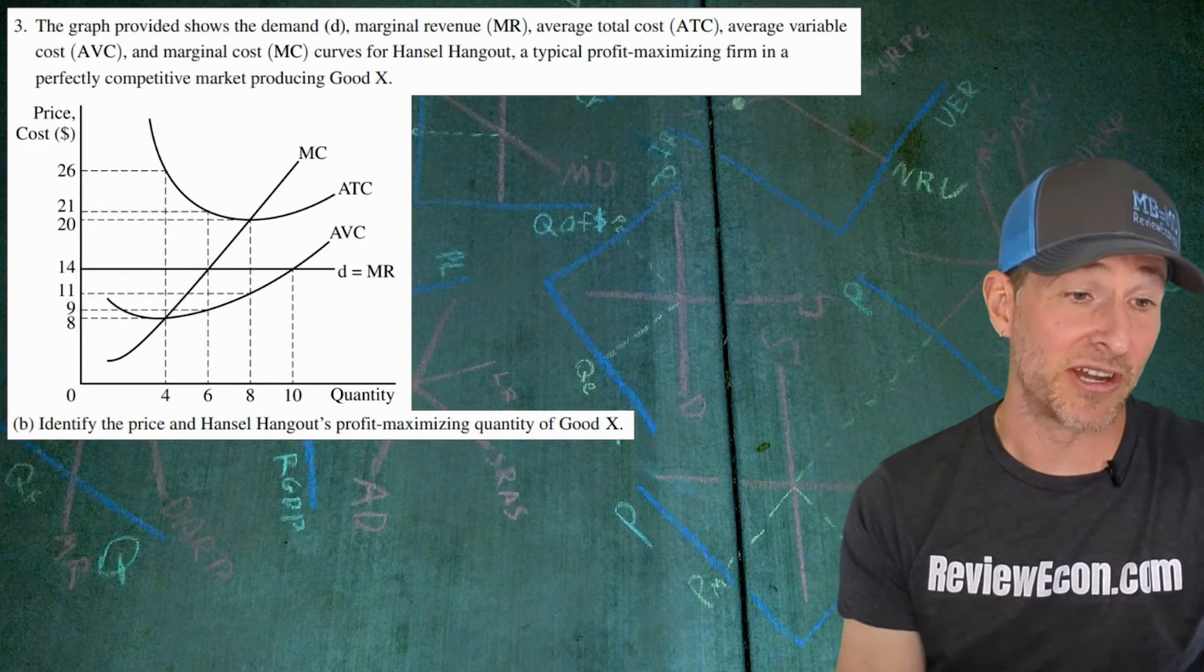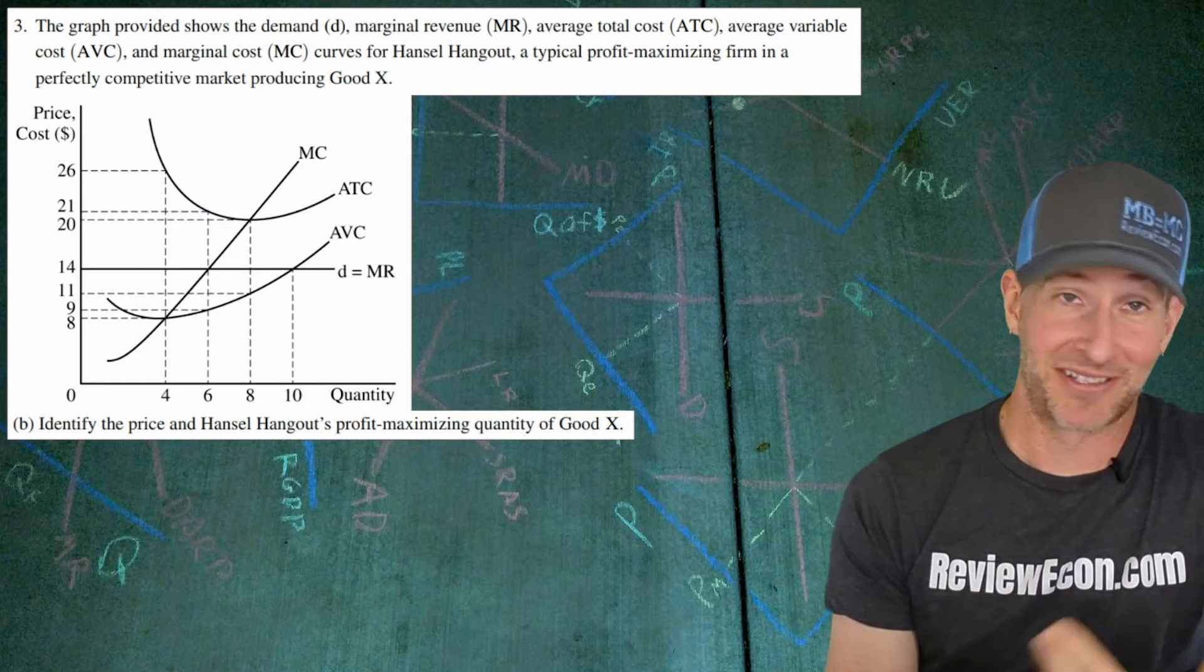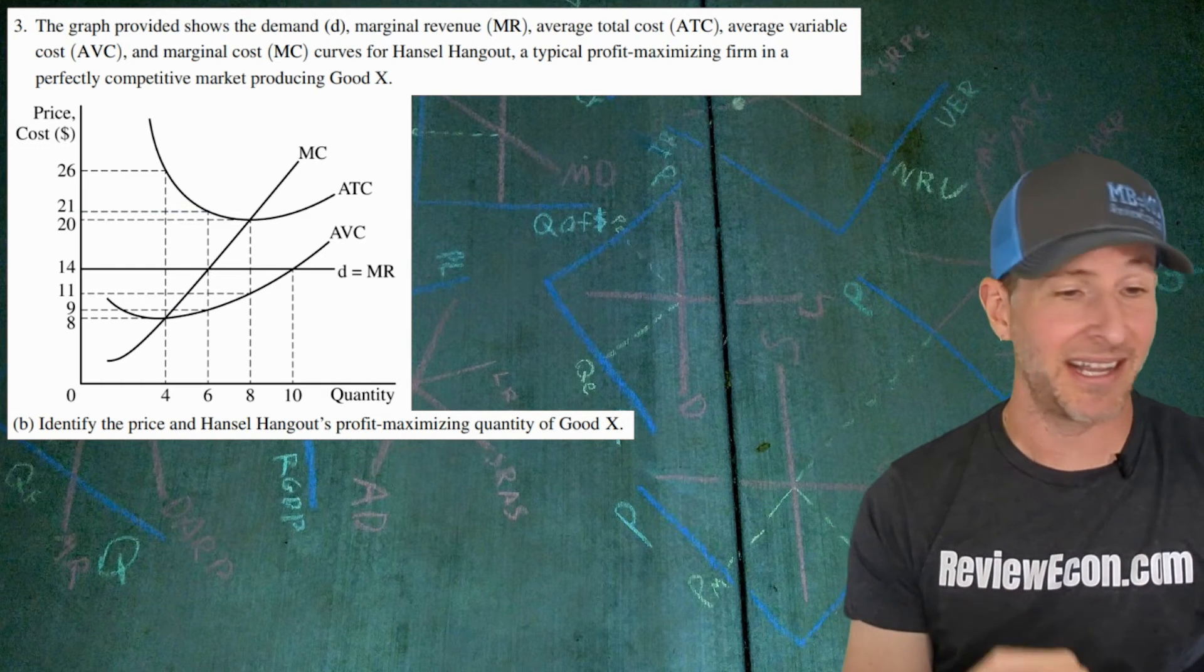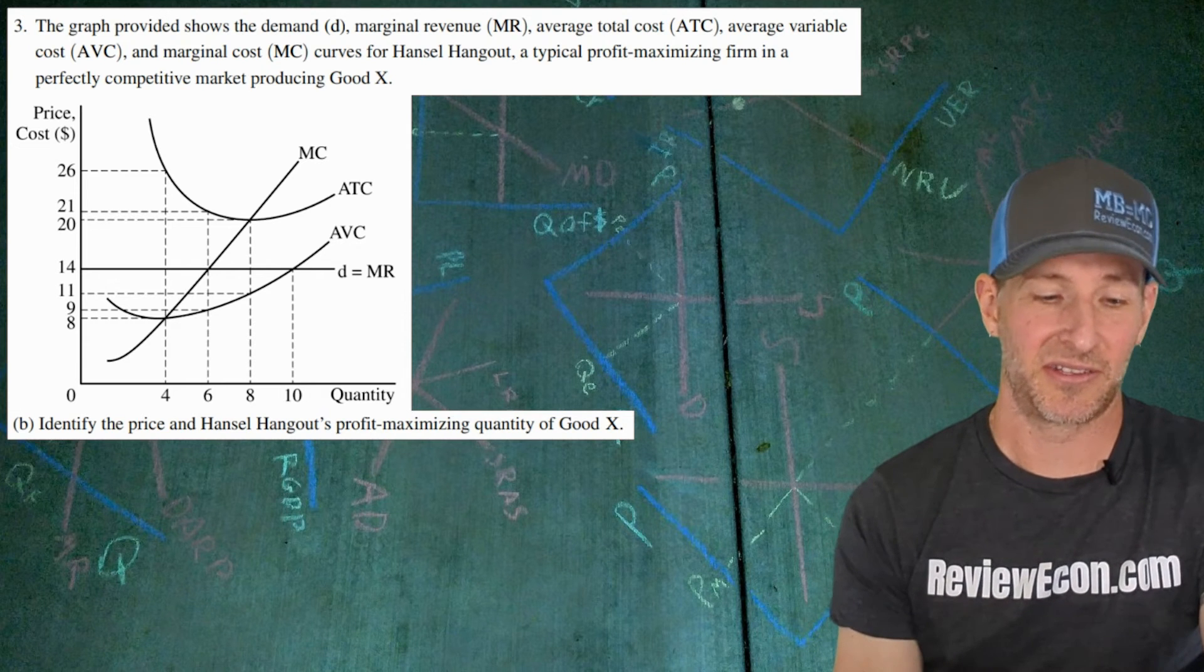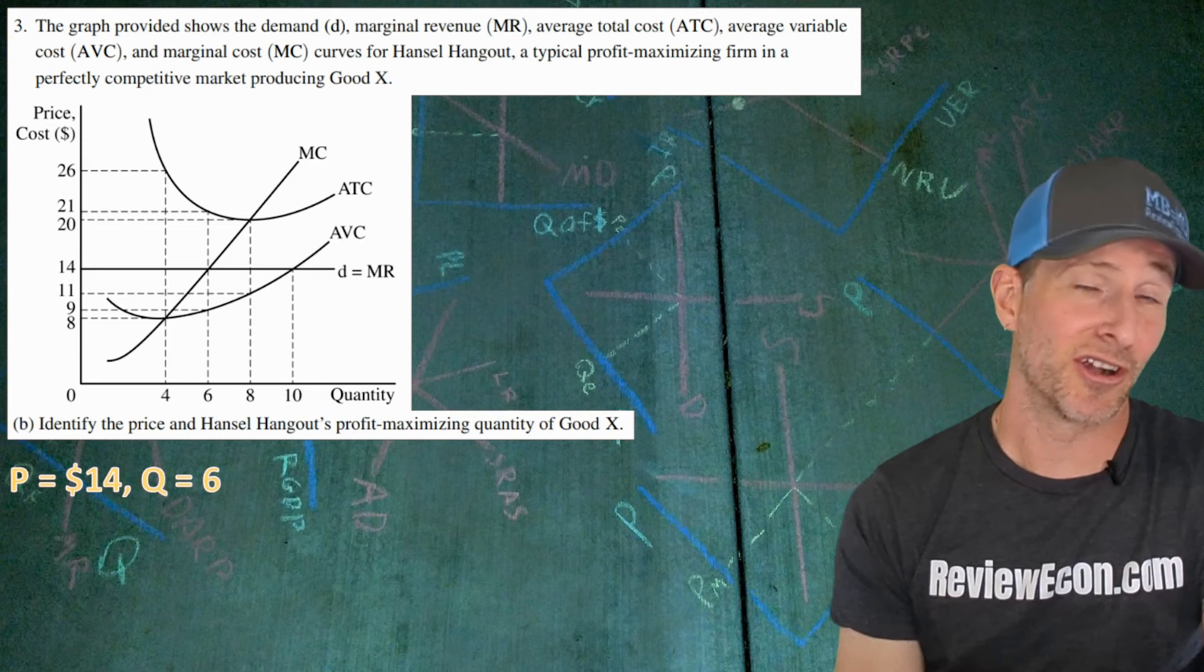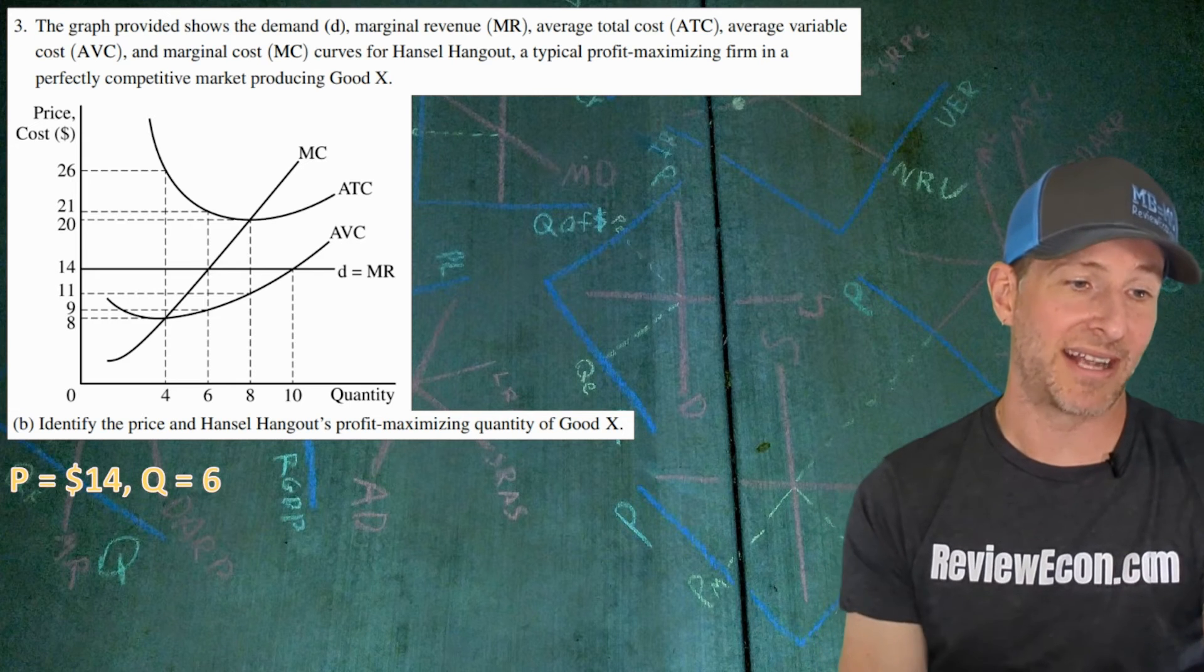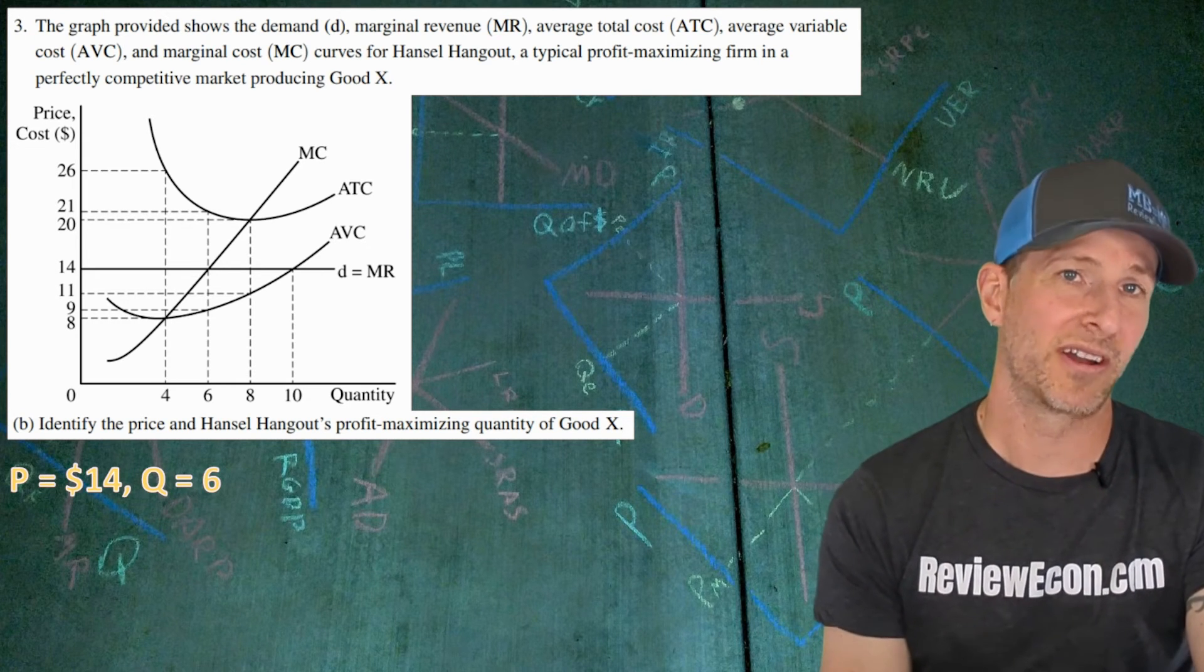Moving on to the next part, we're going to identify the profit maximizing quantity. As I just mentioned, I was answering the last question based on the profit maximizing quantity. Remember, that is where MR equals MC. MR equals MC, drop down, it's 6 units. And of course, the price is the demand curve. They are price takers. So the market demand curve and marginal revenue comes from the market price, and that is $14. So $14 and a quantity of 6.